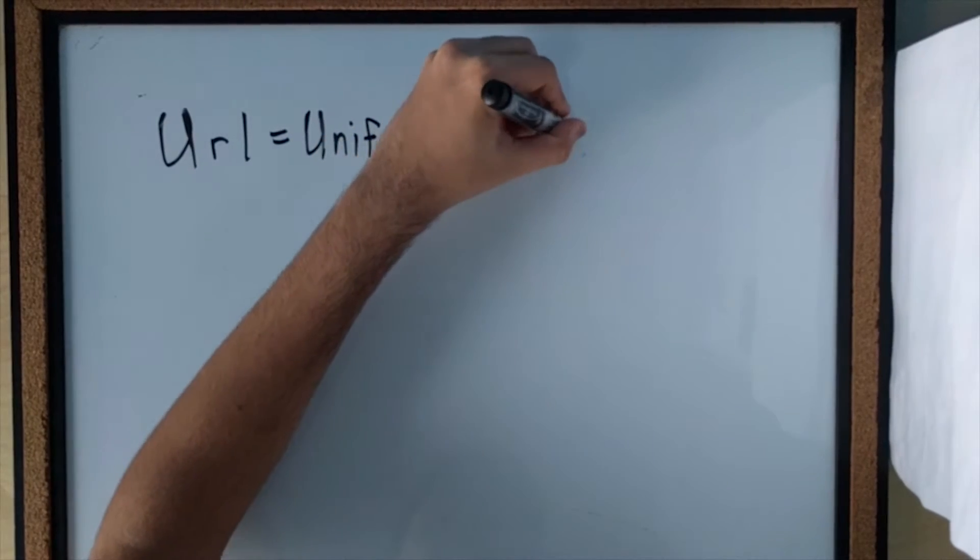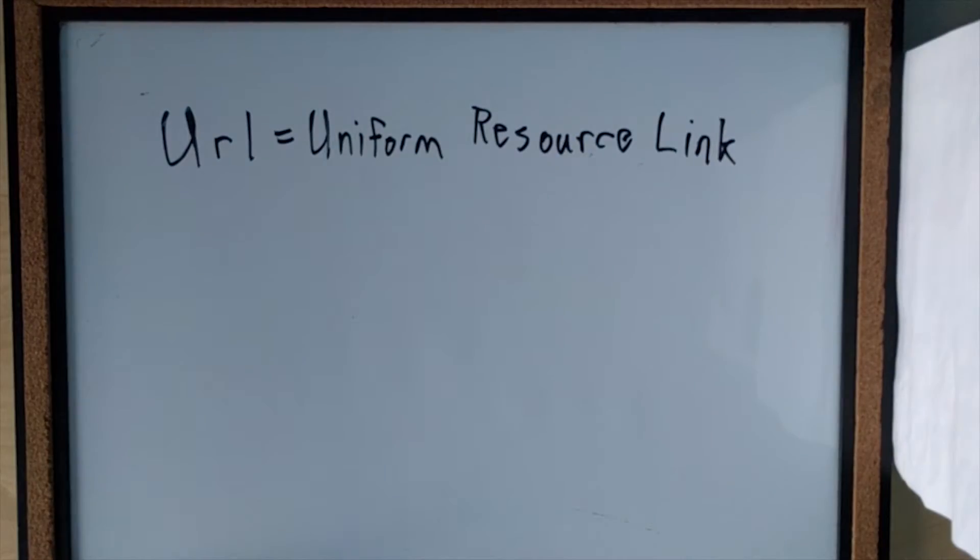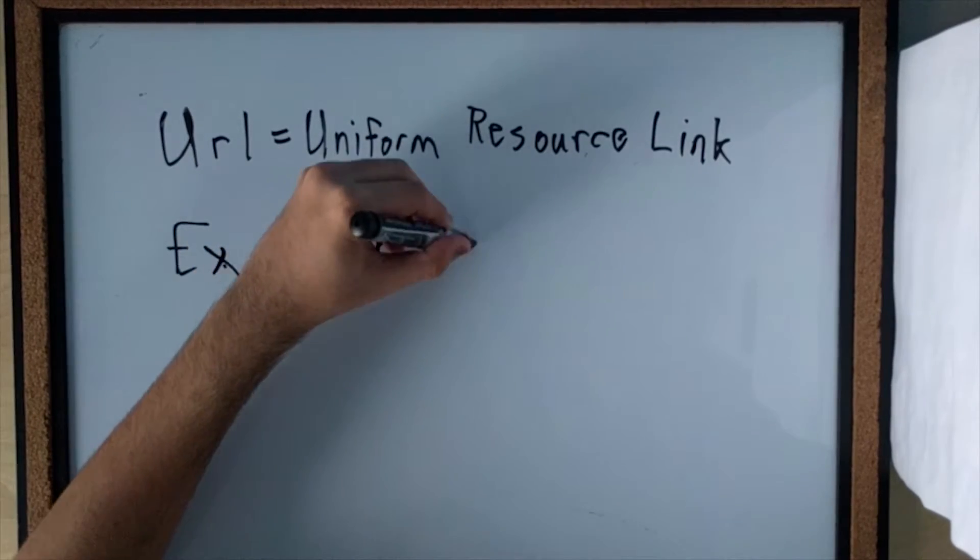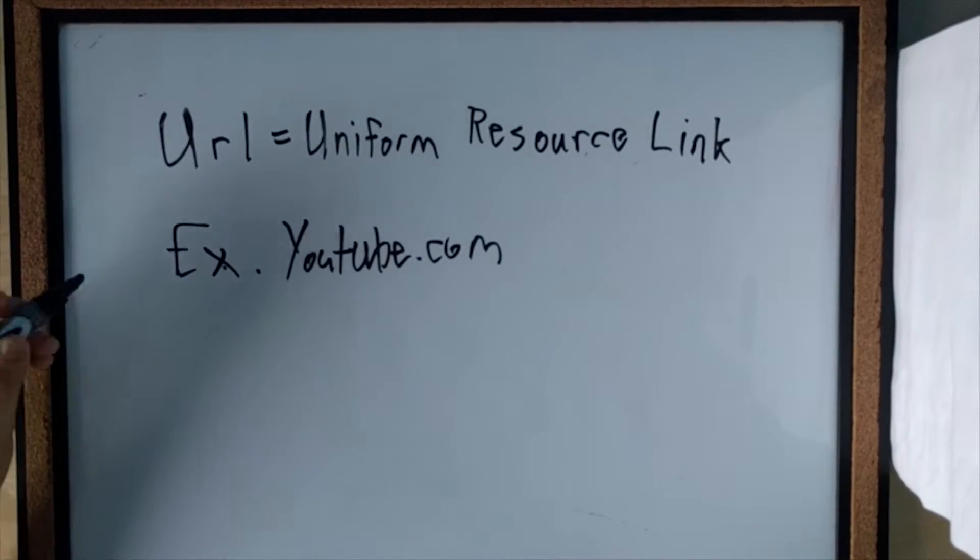Let's look at the average process of an Internet user. You open up your browser and type in the name of your desired website. What you are doing is typing in a URL, or a Uniform Resource Locator. For example, YouTube.com.